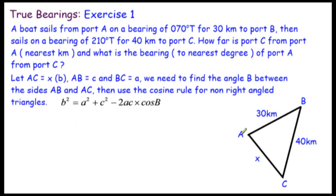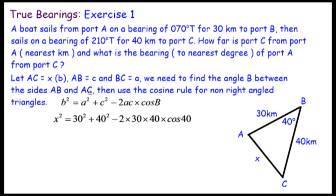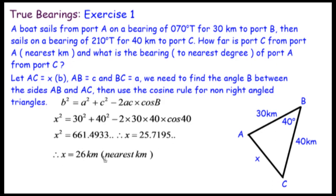Using the cosine rule in the orientation where x is the unknown side: x² = a² + c² − 2ac·cos(B). Here angle B is 40 degrees, side a is 40 km, and side c is 30 km. So x² = 40² + 30² − 2(40)(30)·cos(40°). Working this out gives x² ≈ 661, so x ≈ 26 kilometers to the nearest kilometer.